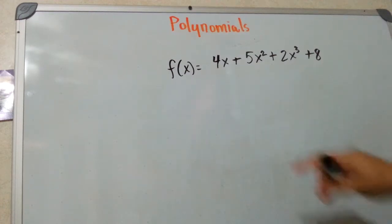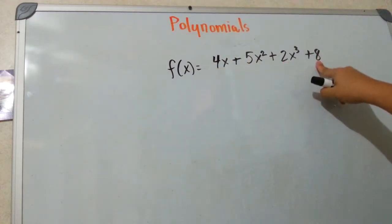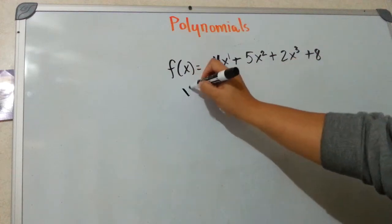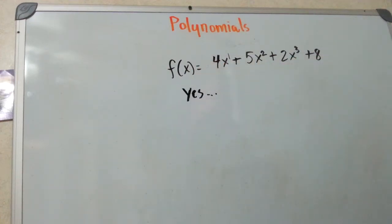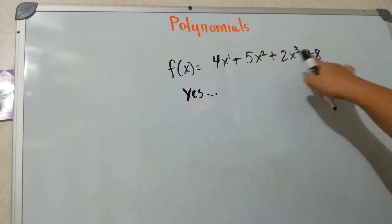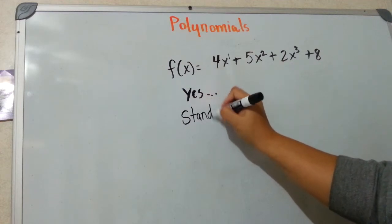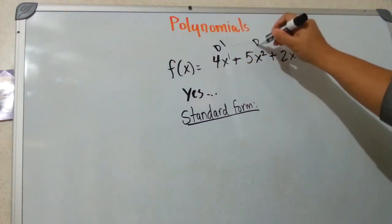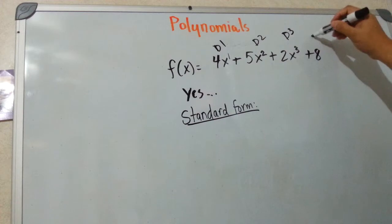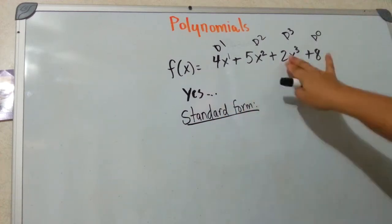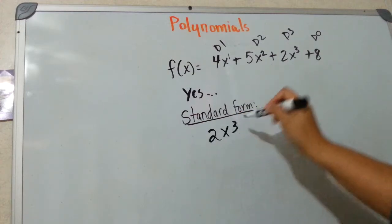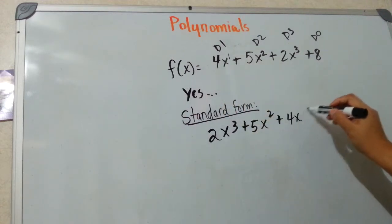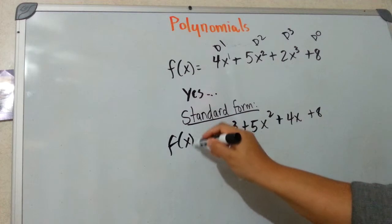So is this a polynomial? Just check — that's real, real, real, real. Whole number, whole number, whole number. There's nothing here, so it's a whole number. Yes, this is a polynomial. Something else we might ask is to put this in standard form, which means putting it in decreasing order. Check the degrees: this one is degree 1, this one is degree 2, degree 3, and degree 0. Starting from the highest degree: 2x cubed plus 5x squared plus 4x plus 8. This is the function in standard form.